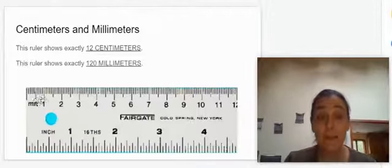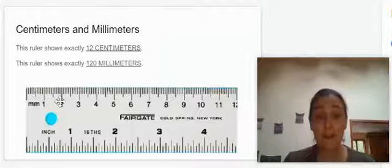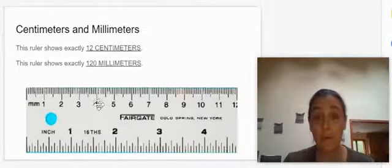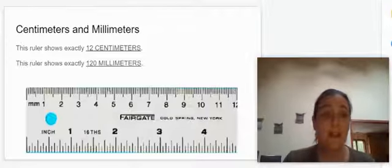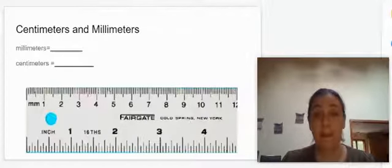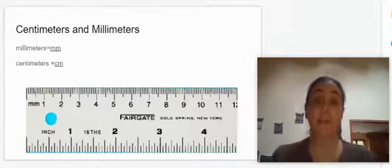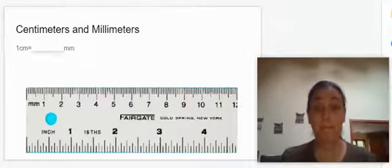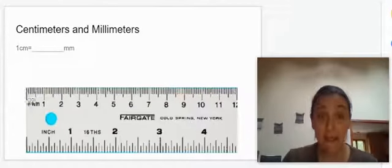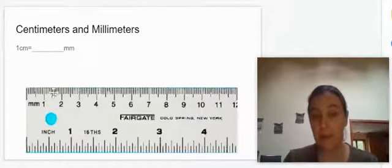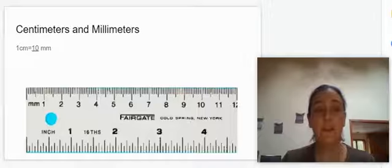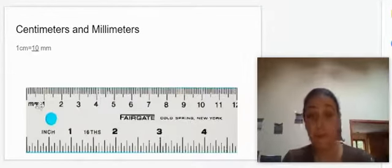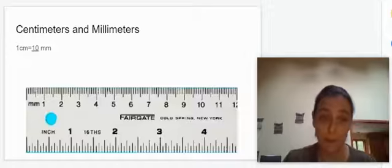And so from here to the one is 10 millimeters and another 10 makes 20, 30, 40, 50, 60, 70, 80, 90, all the way up to 120. Millimeters are abbreviated with mm. Centimeters are abbreviated with cm. One centimeter from this line to this line is equal to 10 millimeters. So if you have one centimeter, you really have 10 millimeters. If you've got 12 centimeters, you've got 120 millimeters.